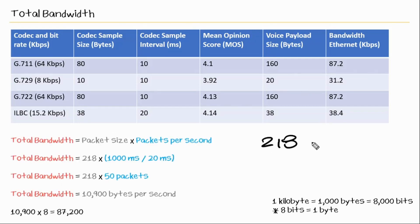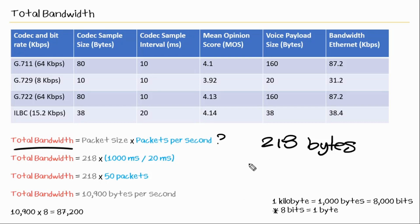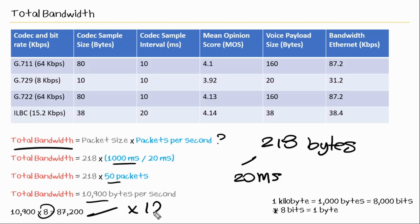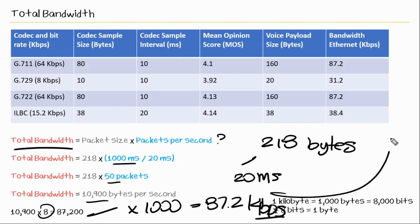So we know at this point we have 218 bytes of data, which includes the voice payload and also the overhead. The equation is: total bandwidth equals packet size times packets per second. How do we determine packets per second? We know that 218 bytes comes from a 20-millisecond sample. Since 1,000 milliseconds equals one second, we divide 1,000 by 20 and get 50 packets per second. So 50 times 218 gives us 10,900 bytes per second. Multiplying by 8 to get bits gives us 87,200, and multiplying by 1,000 gives us 87.2 kilobits per second.